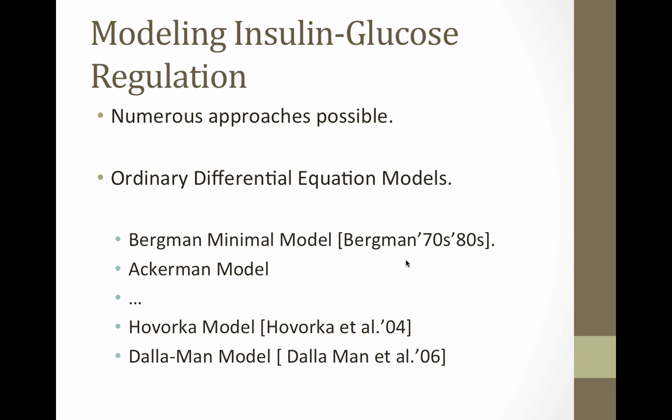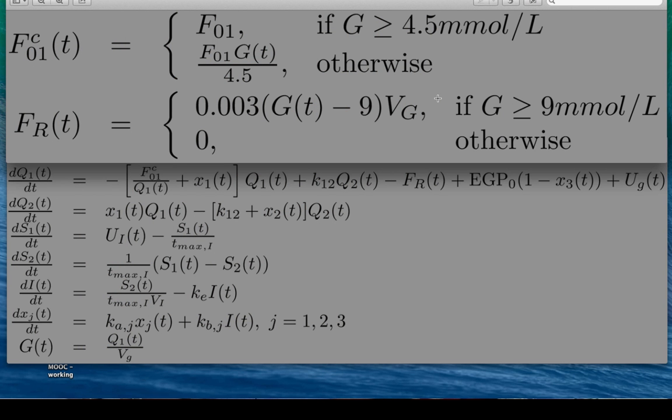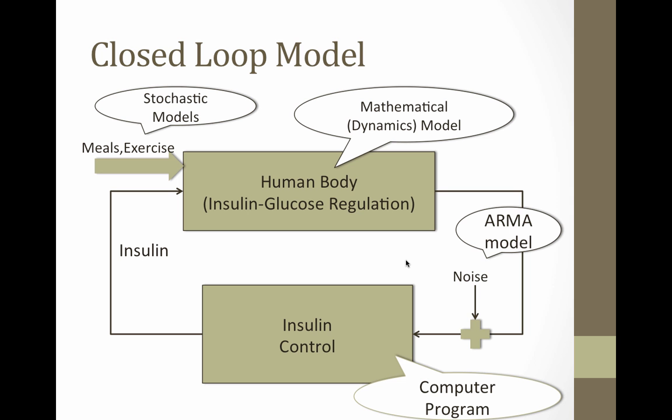There are many ODE models here, starting from work by Bergman in the 70s and 80s — the Bergman Minimal Model. There's no straightforward mapping between the variables in these models and physical quantities inside the human body, so those are called minimal models. The approach we take uses physiological models like the Havorka model or the Dallaman model, which have terms for how much glucose is in the brain or stored in the liver. These differential equations model the physiology to a large extent, and the slide shows the differential equations and the whole closed-loop model we are forced to study.